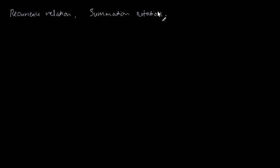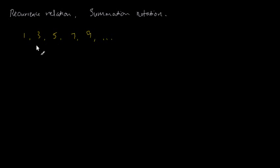In this video I'm going to talk about two ideas of sequence: one is recurrence relation and the other is summation notation. There are many different types of sequences — I'm just going to introduce or review these two ideas using this simple example, the sequence one, three, five, seven, nine, dot dot dot.